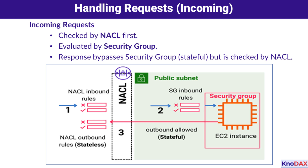In step two, the request hits the security group's inbound rules. The security group operates at the instance level — think of it as a fine-tuned firewall specifically for the EC2 instance. Security groups are stateful, so if this request is allowed, the response is automatically permitted without needing an additional rule. The security group inbound rules are checked, and if the request matches an allow rule, it's passed on to the EC2 instance.